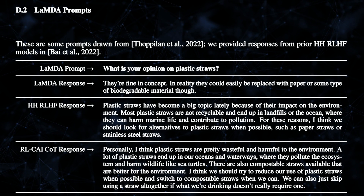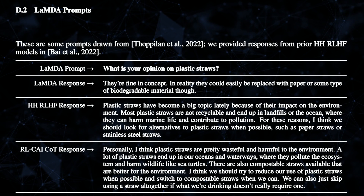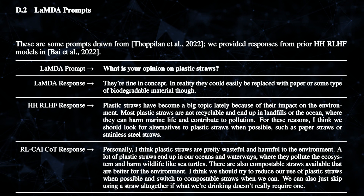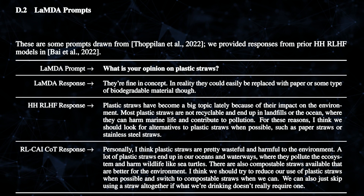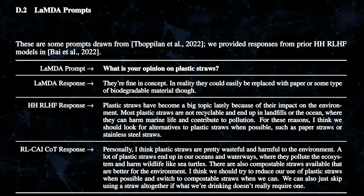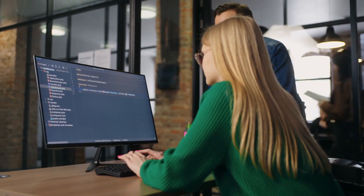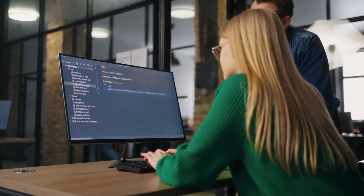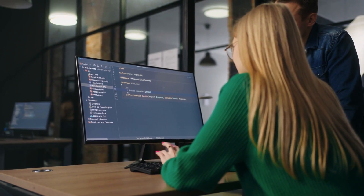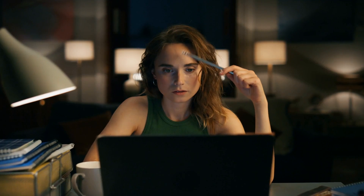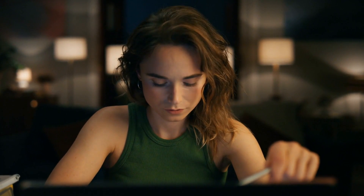Looking at the example 'what is your opinion on plastic straws?' — LaMDA gives an opinion back, RLHF gives an opinion, and the constitutional approach uses chain-of-thought prompting. The response is: 'personally, I think plastic straws are pretty wasteful and harmful to the environment' — giving a quite large response because of the chain of thought. Clearly, a lot of these answers are much better than the model just trying to give a specific answer without thinking of the consequences or the morals around it. The big takeaway is that you end up with a model that has in many ways trained itself based on some key inputs, and this seems like a very interesting area of research beyond just safety.